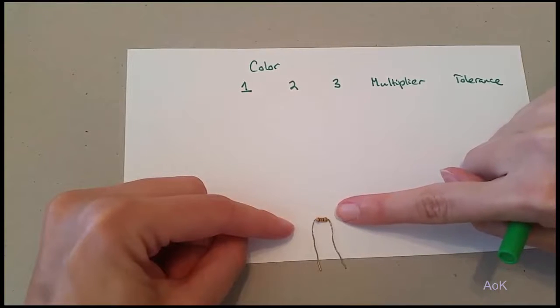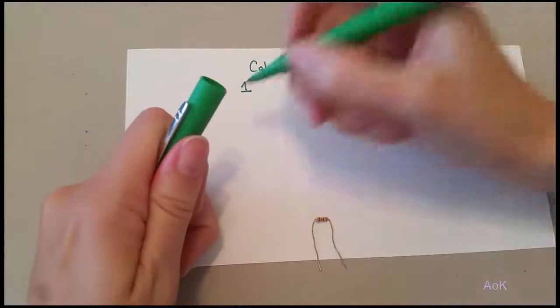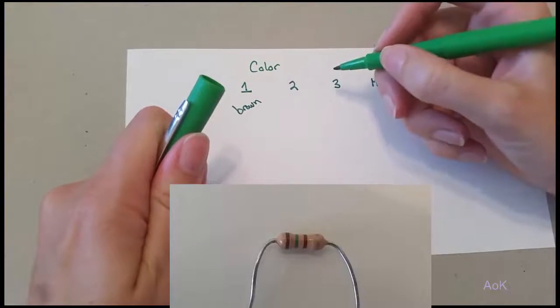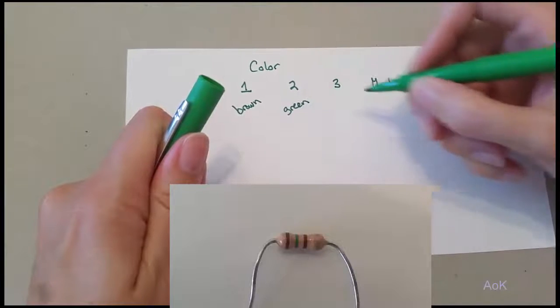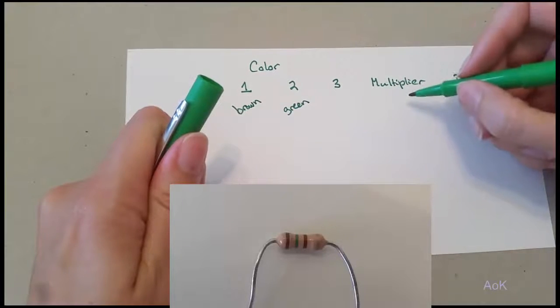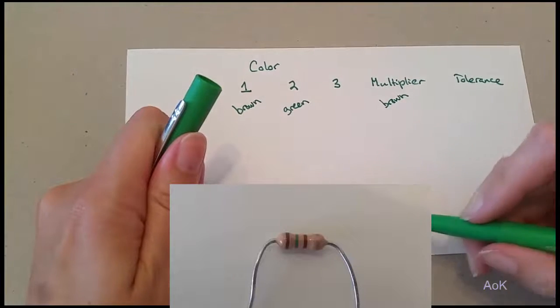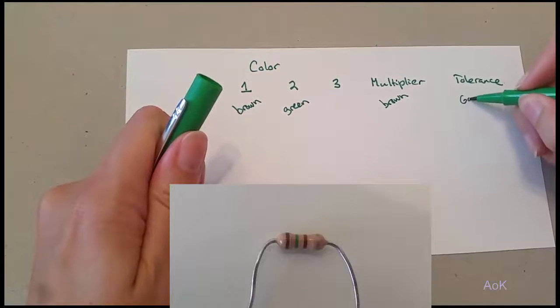So take for example this basic resistor with four different color bands on it. The first color is brown. The second color is green. The third color in this case is actually the multiplier which is also brown, followed by the very last color which is gold, that's the tolerance.